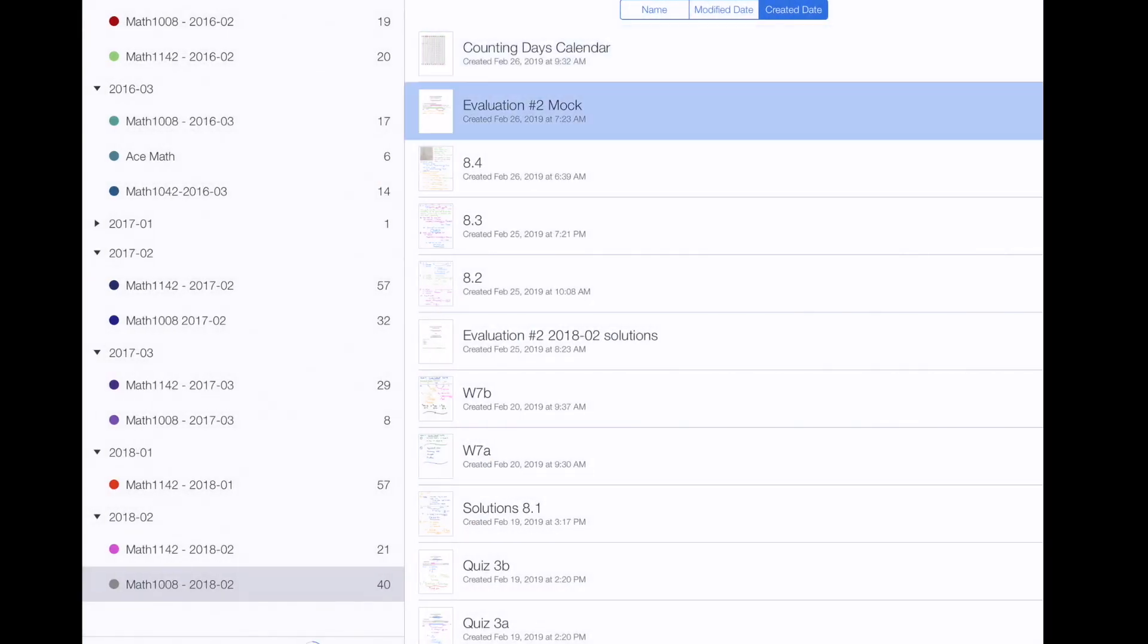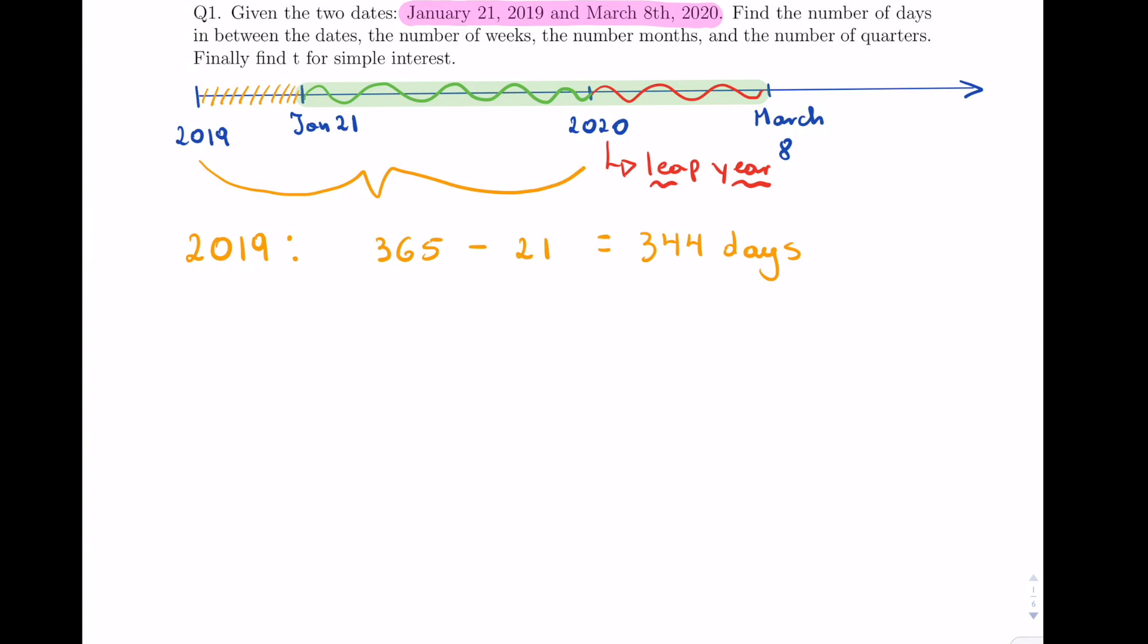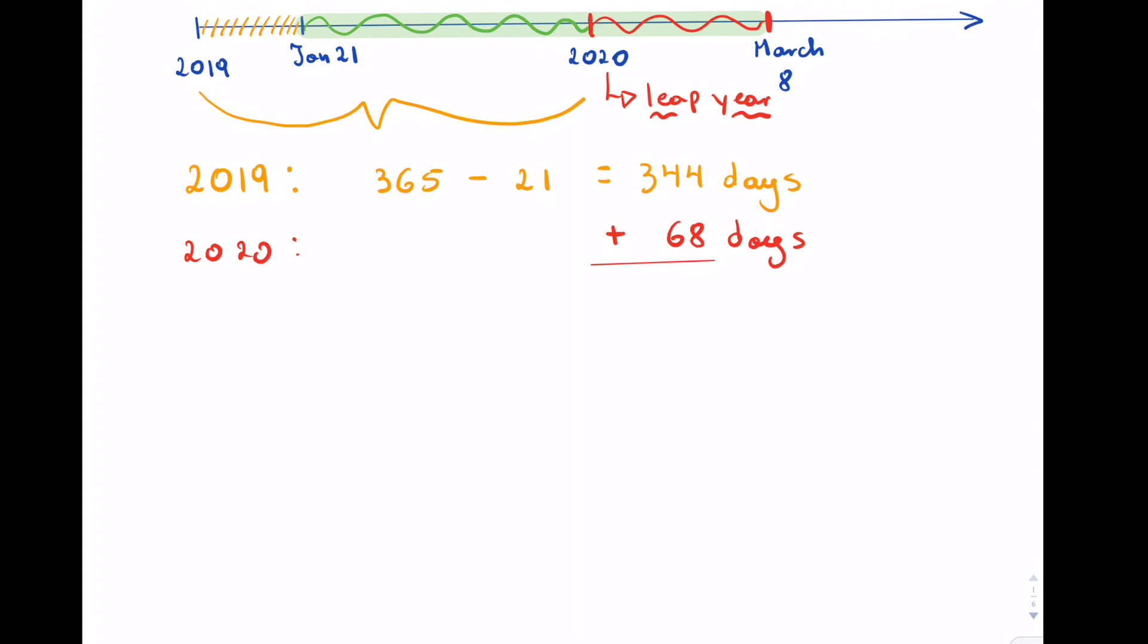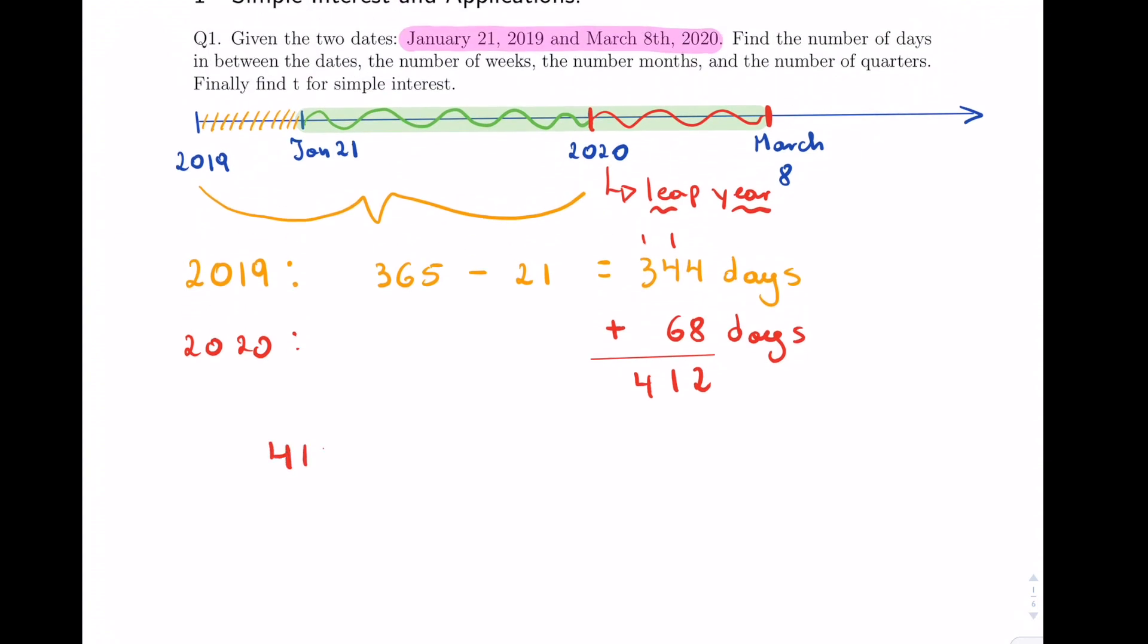In 2020, March 8th is the 68th day, so we have 68 days. Now we can add these up. So we have in total 412 days.